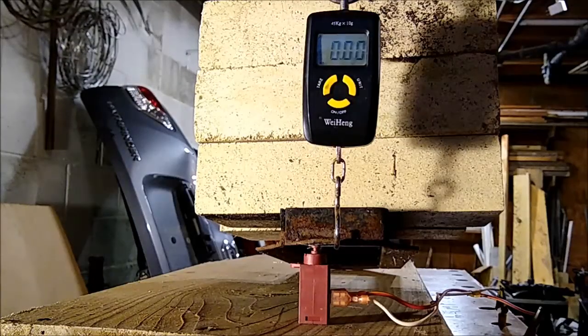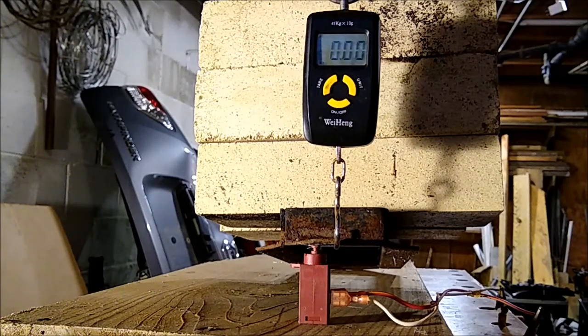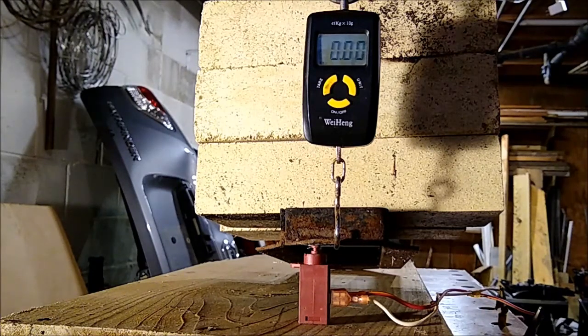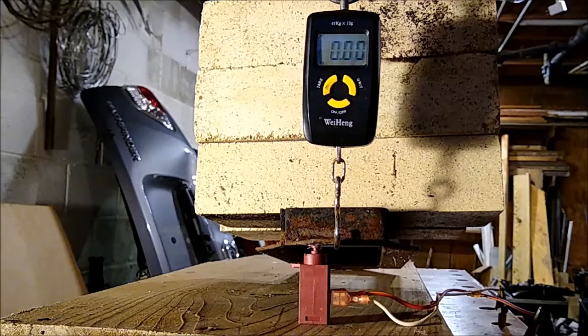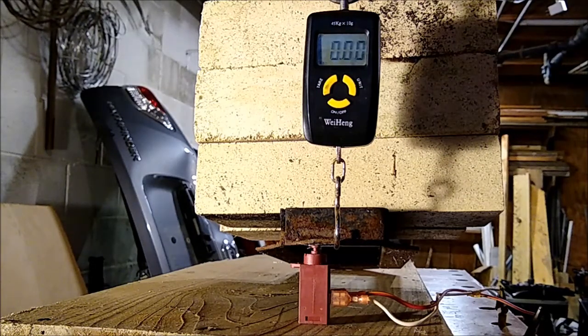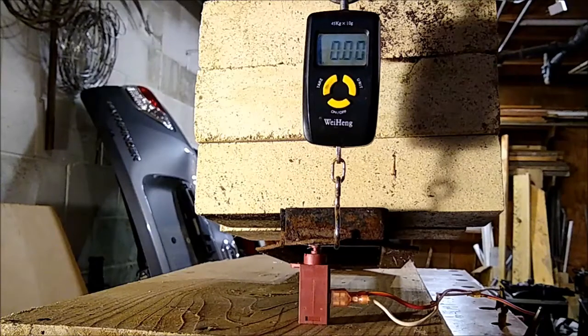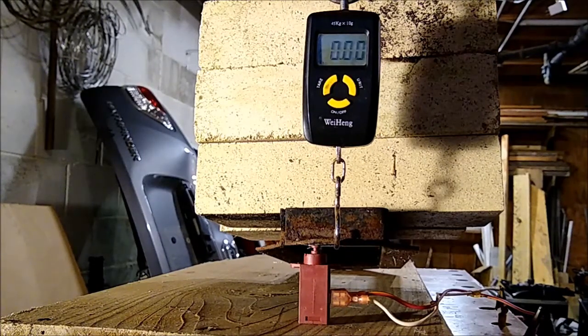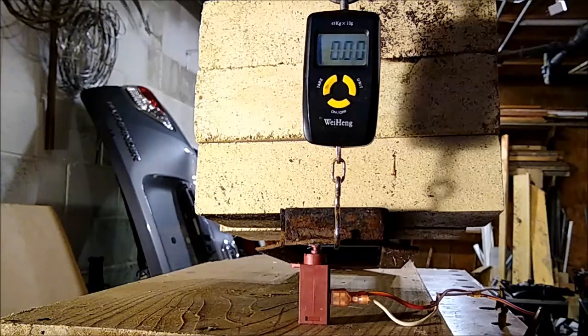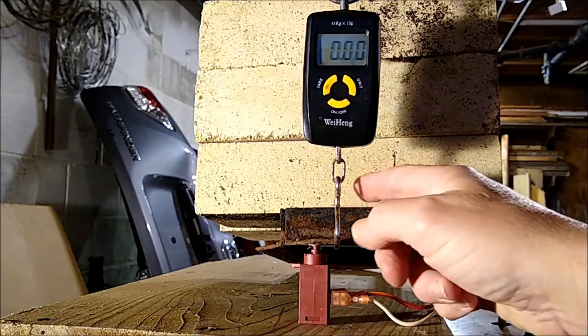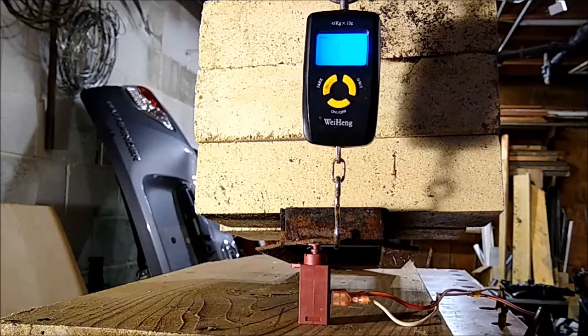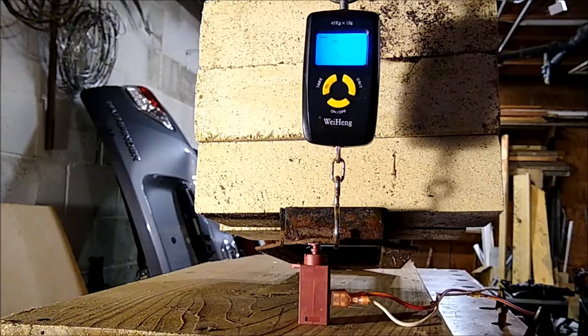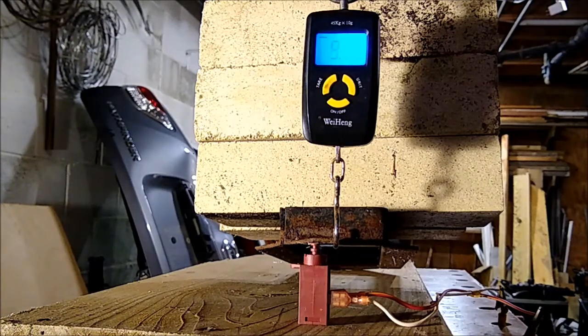Okay now I've got six bricks and I'm going to power up the wax motor and it should try to lift that and we should see the amount of weight as a negative number. I just turned the scale on while the weight was on the scale and it's starting to lift it. See if it can lift all six bricks.